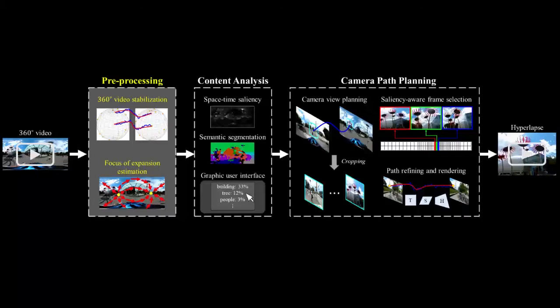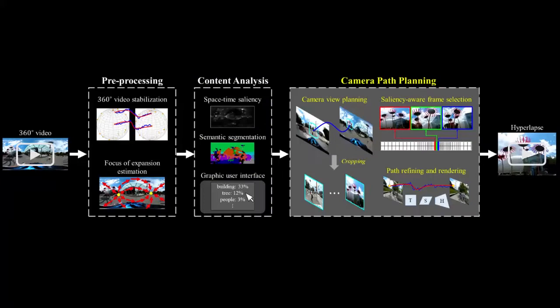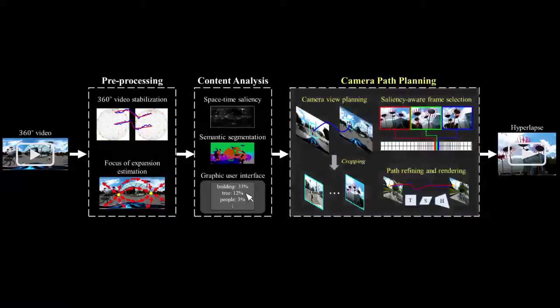Our system consists of four steps. First, we stabilize the panoramic video, then we analyze the content. Next, we find an optimal path that focuses on and transitions between objects of interest to create a hyperlapse that captures the interesting content, and then we render the result.